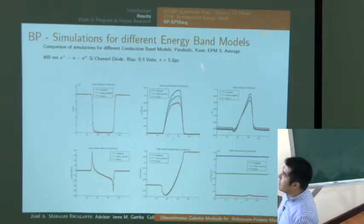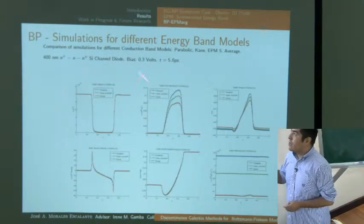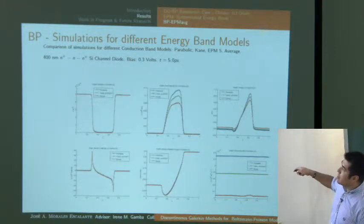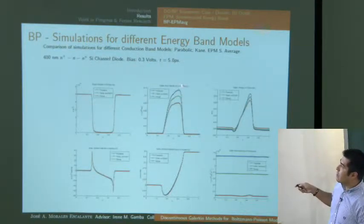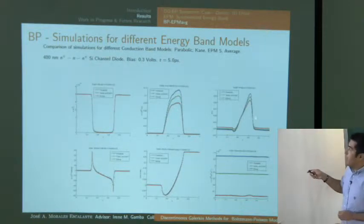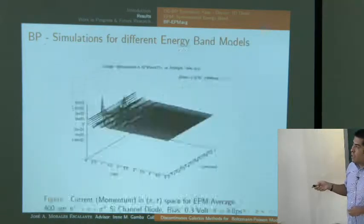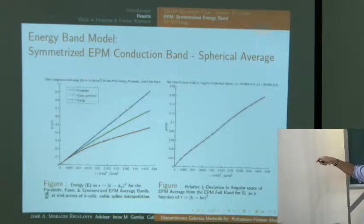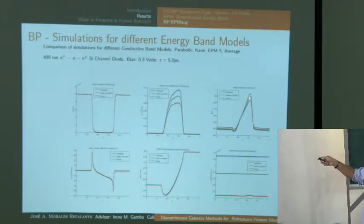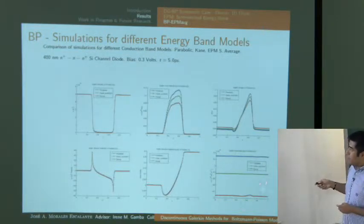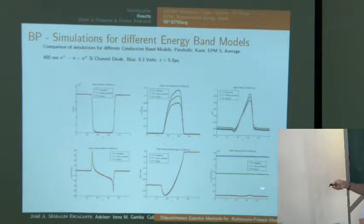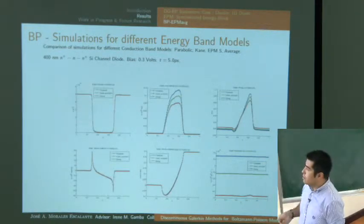At five picoseconds with a 0.3 volt applied potential, the density has stabilized. The average velocity shows a clear quantitative difference between the three band models: parabolic overestimates, Kane is lower, and the spherical EPM average is the lowest. This is consistent with the energy comparison — parabolic overestimates energy, then Kane, then the spherical average. The electric field and potential do not change much, but the average momentum (current) also differs between the three models.